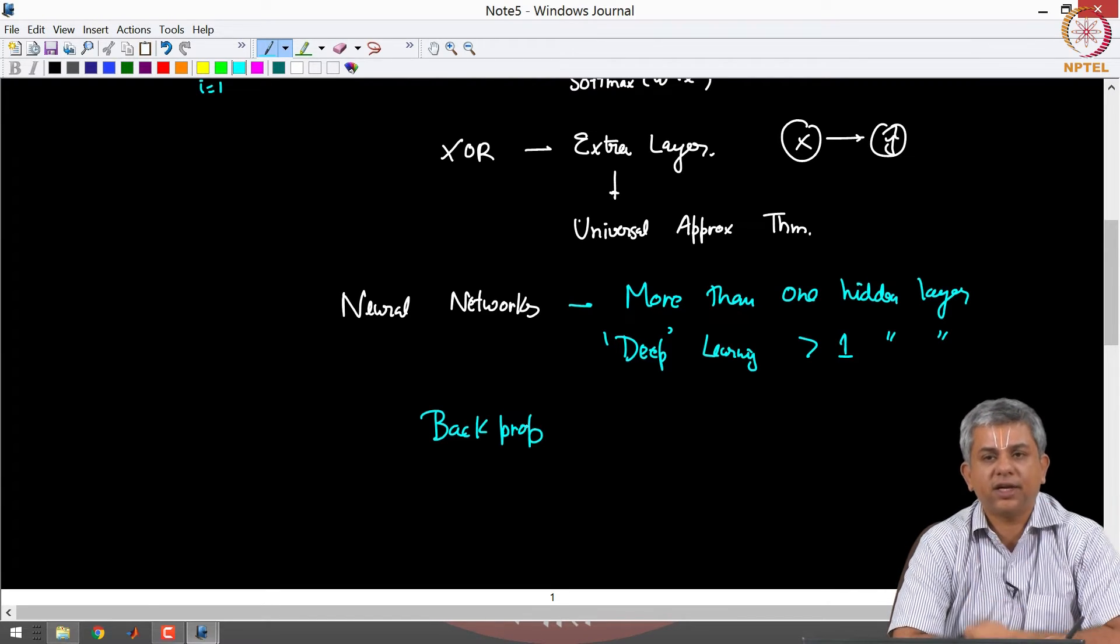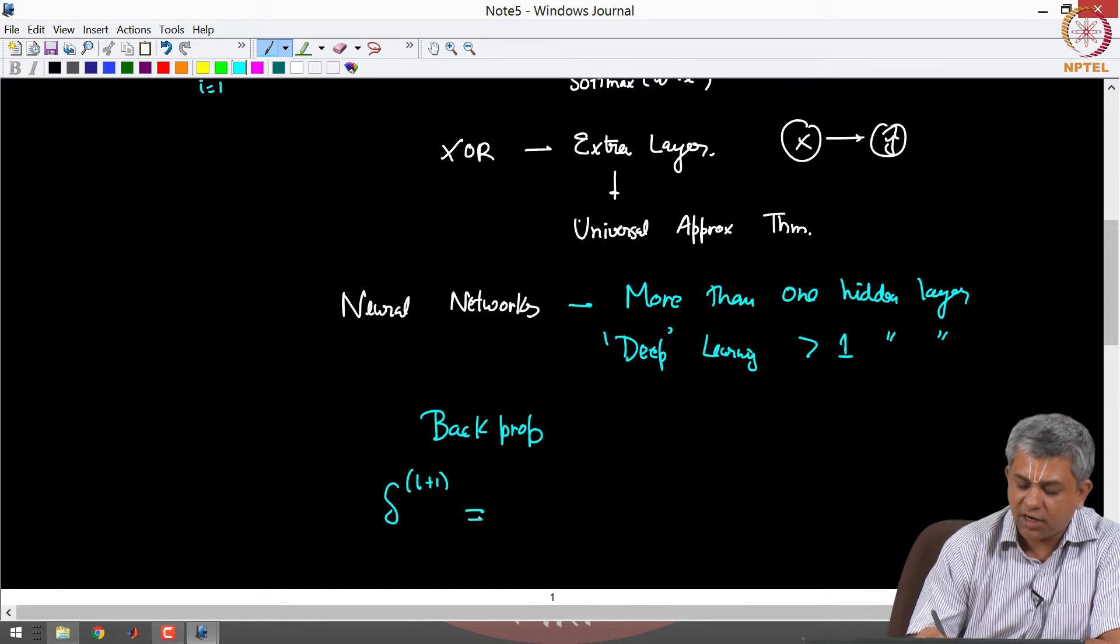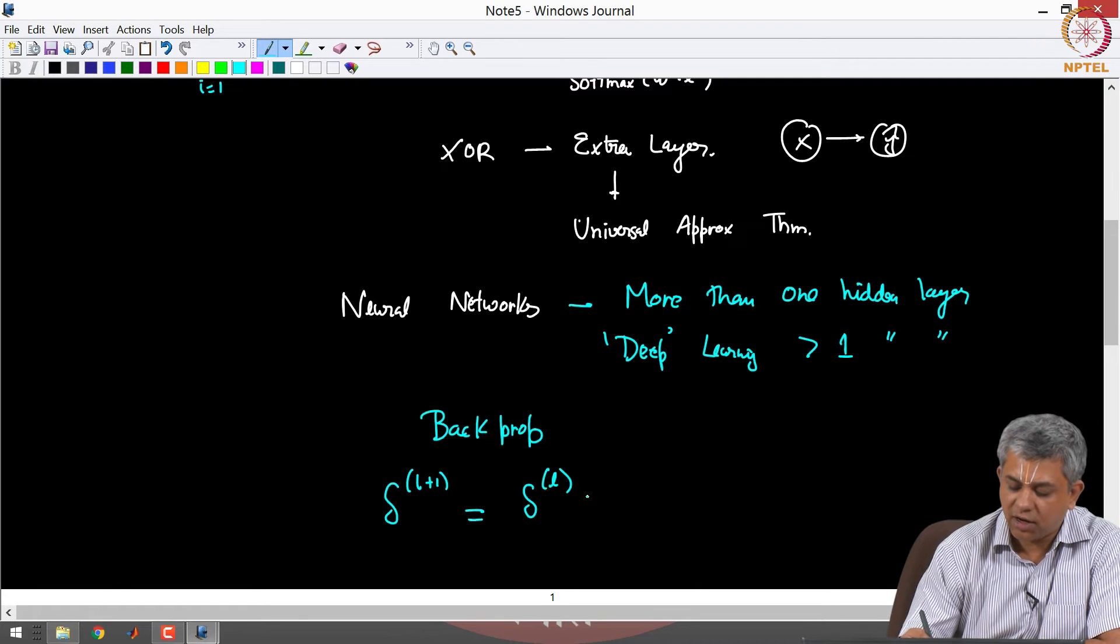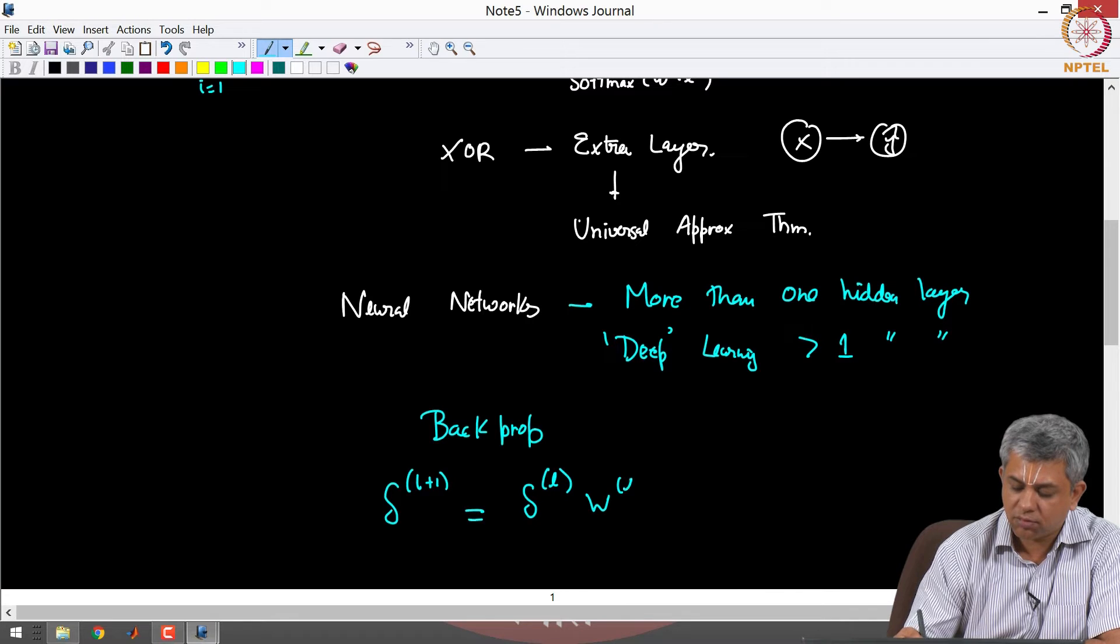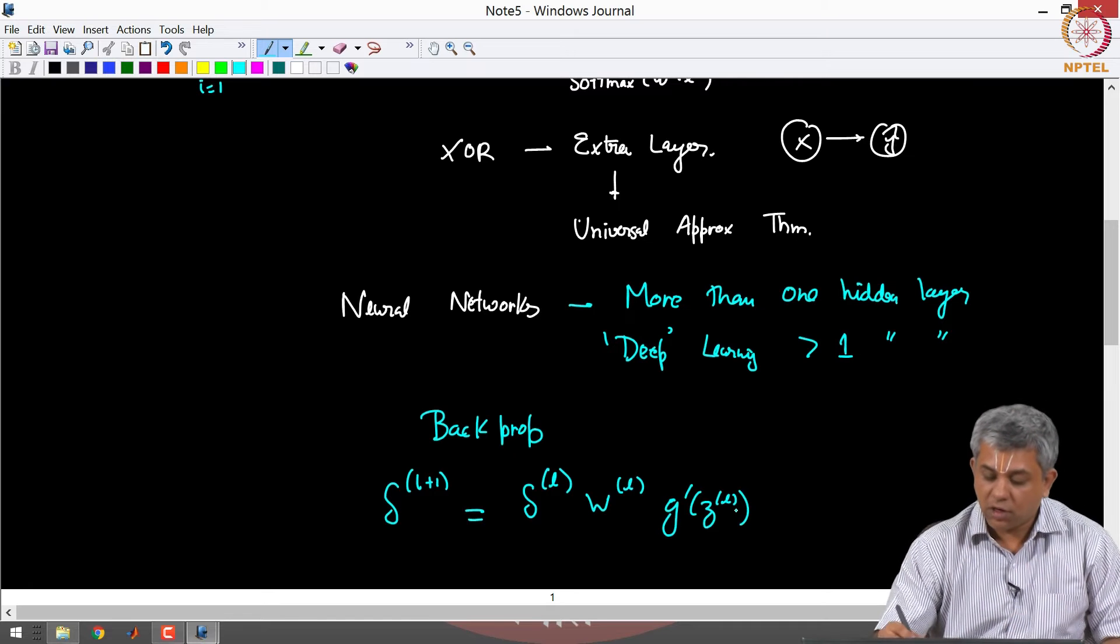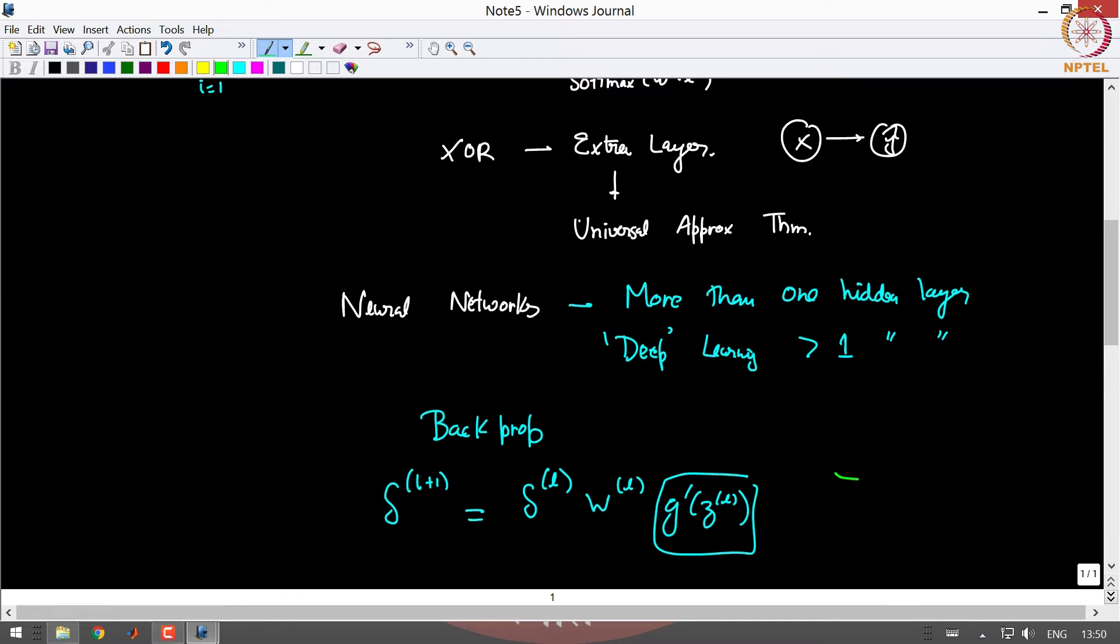One thing that tends to happen is if you recall our expression was delta L plus 1 was delta L times W times G prime Z. Notice this term G prime Z. When you have a sigmoid this G prime or the slope of the sigmoid can actually get small.